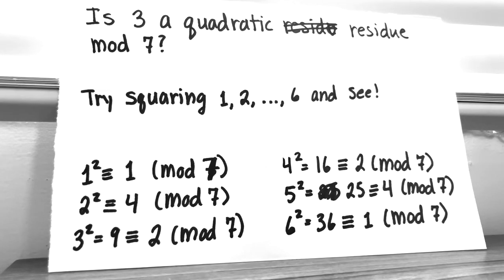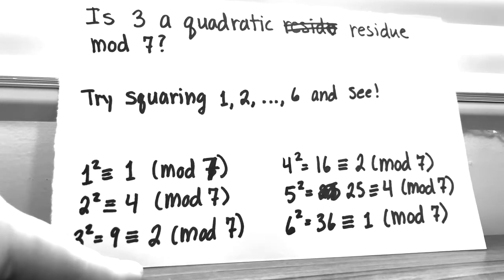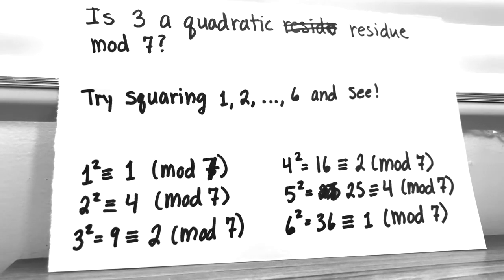We square 1 through 6, so from 1 to m minus 1, and see if any of them turn out to be 3 mod 7. So 1 squared, 2 squared are straightforward. 3 squared is 9, which is congruent to 2 mod 7. So that does mean that 2 is a quadratic residue mod 7. And then 4 squared ends up being 2, 5 squared ends up being 4, and 6 squared ends up being 1.